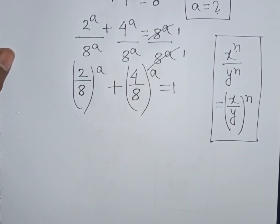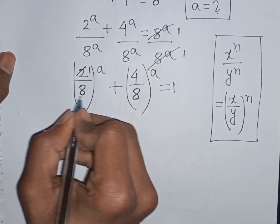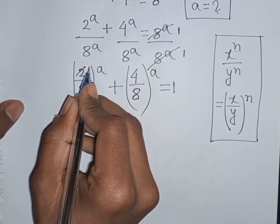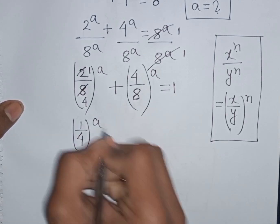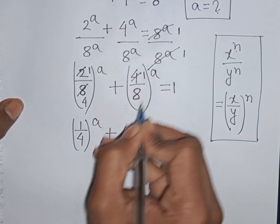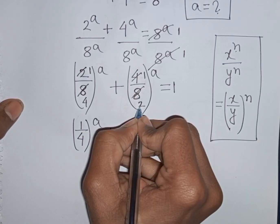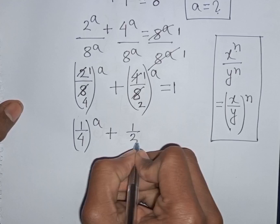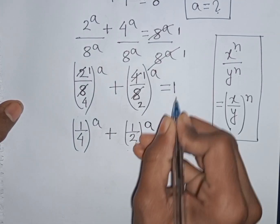Now 2 divided by 8 means it will be 1/4, so we have (1/4)^a. Then 4 divided by 8 means it will be 1/2, so we have (1/2)^a. Therefore (1/4)^a plus (1/2)^a is equal to 1.